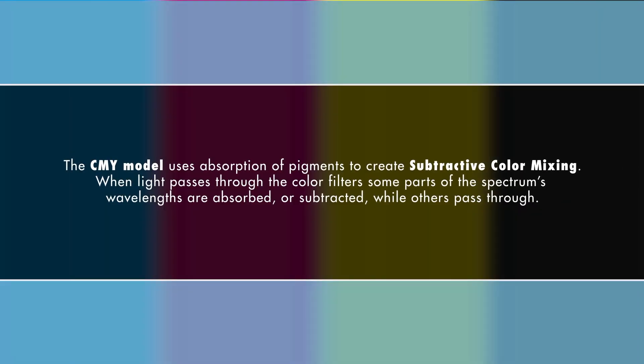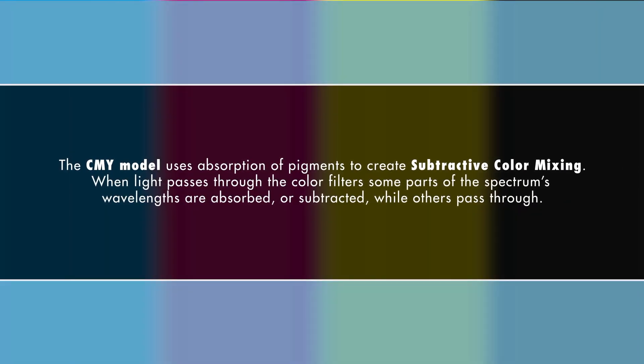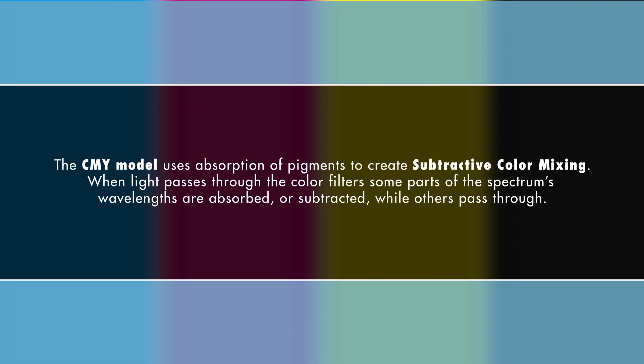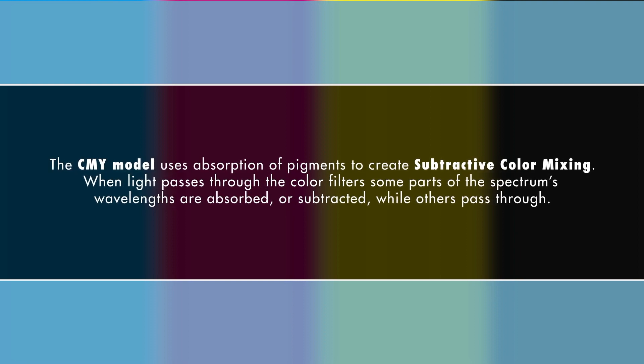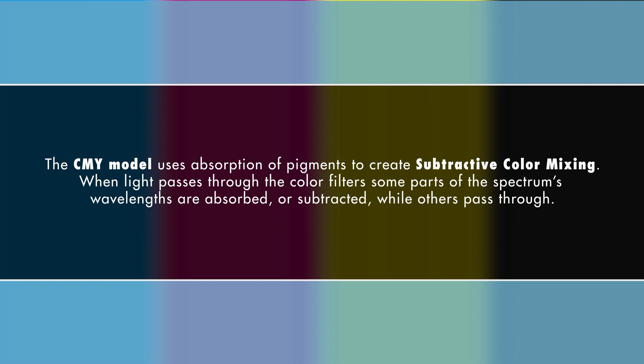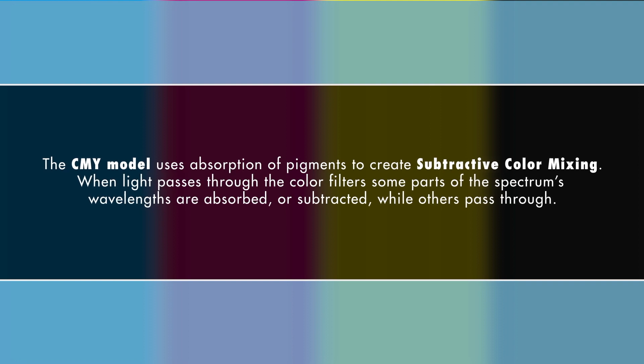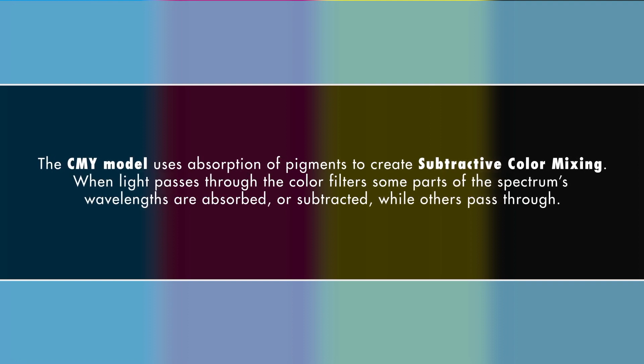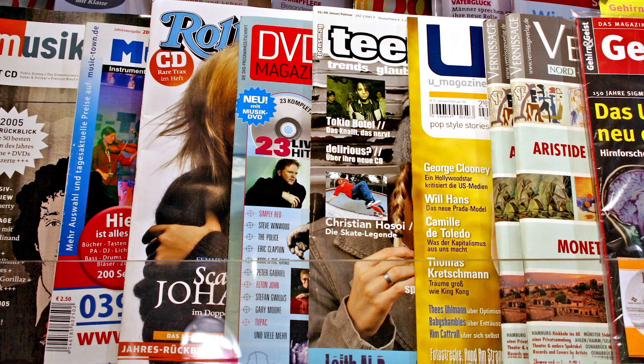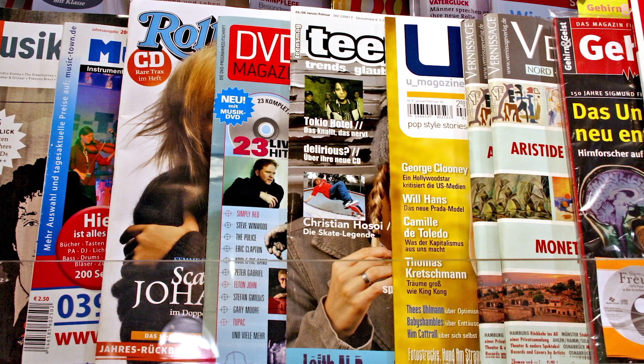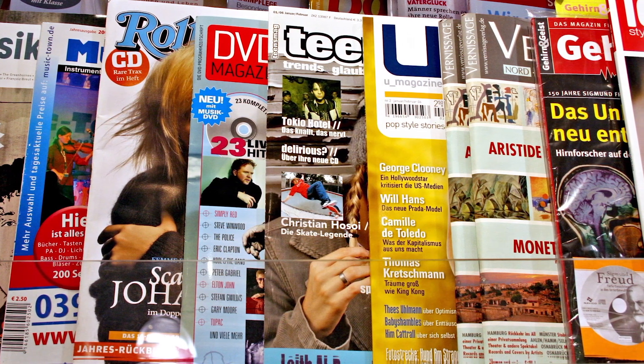The CMY model uses absorption of pigments to create subtractive color mixing. When light passes through the color filter, some parts of the spectrum's wavelengths are absorbed or subtracted, while others pass through. Subtractive color mixing can be found in magazines, advertisements, and other printed material. And just as additive colors can create subtractive colors, the reverse can be done — mixing subtractive colors can create primary colors.